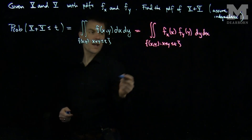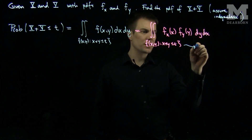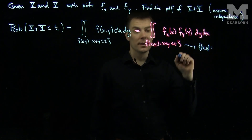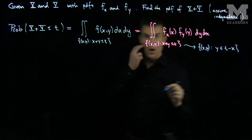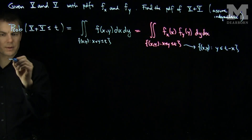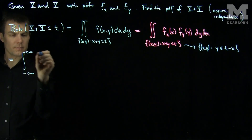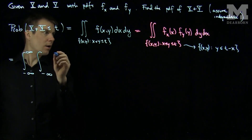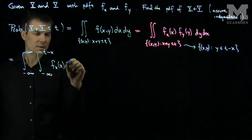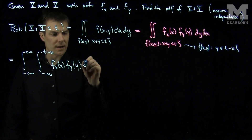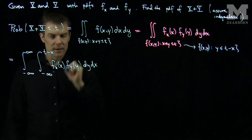If we choose to do dx dy, we note that the constraint x plus y less than or equal to t is equivalent to y less than or equal to t minus x. So we can rewrite the limits of integration as: x goes from negative infinity to positive infinity, and y goes from negative infinity up to t minus x. Then we have fx(x) times fy(y) dy dx.